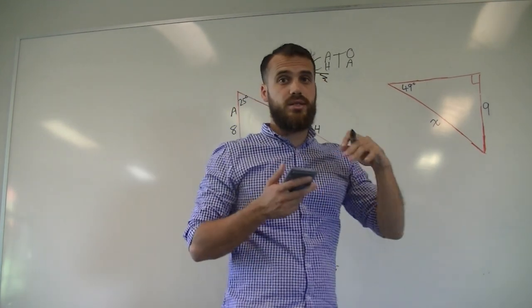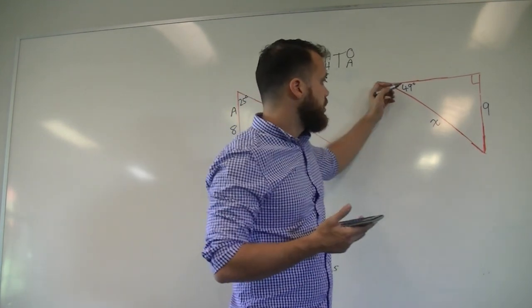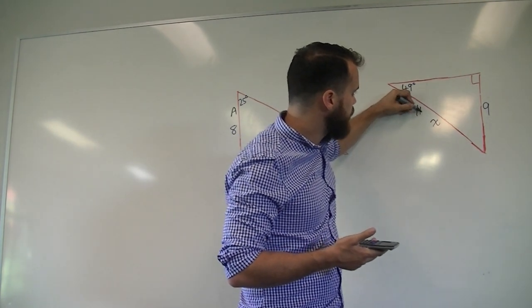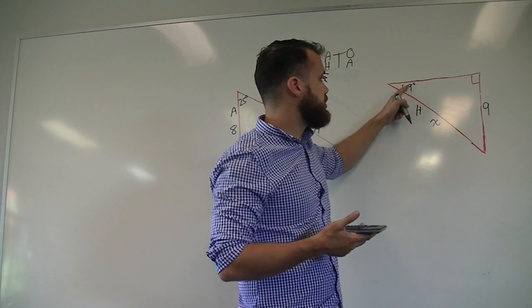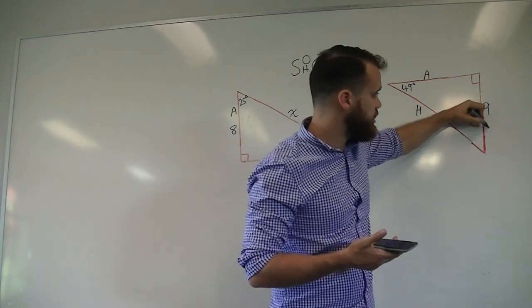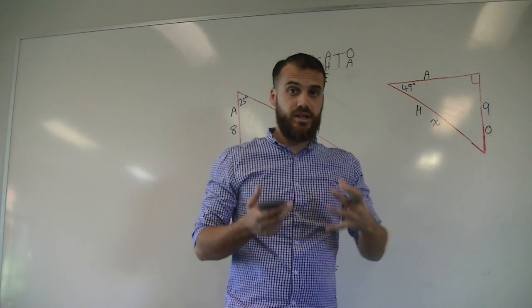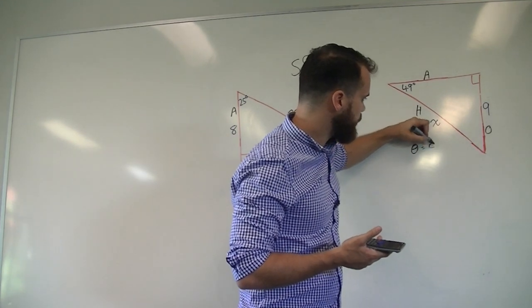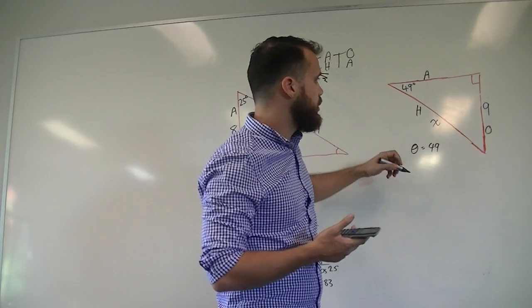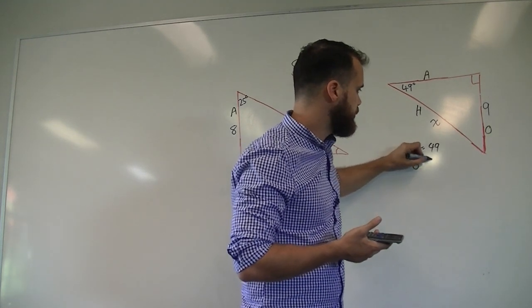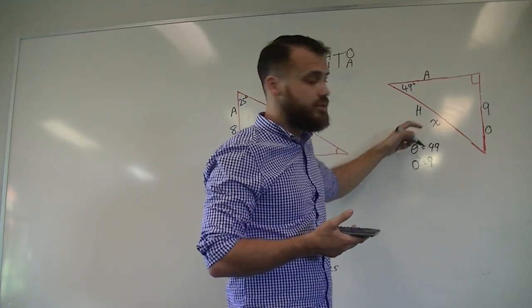Angle of interest, 49. So we need to now label our sides. As always, the longest side, the one opposite the right angle, is the hypotenuse. The one next to the angle of interest is the adjacent and the one opposite it is the opposite. Right, summary, so we know that our angle of interest is 49. We know that our opposite side is 9. And we know that our hypotenuse is x.